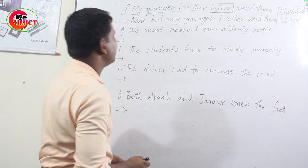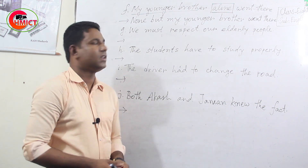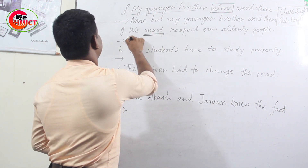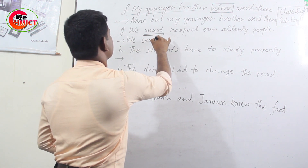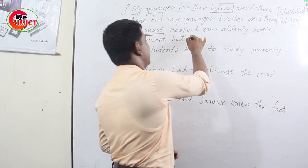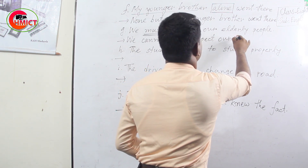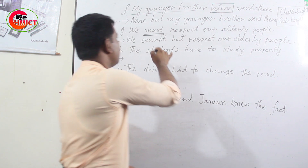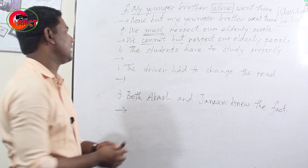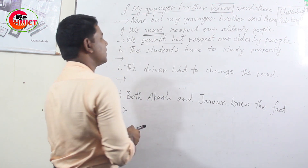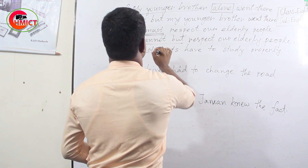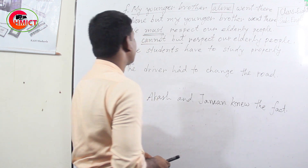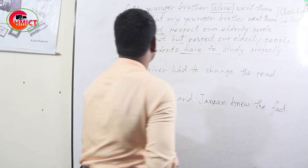Now sentence G: 'We must respect our elderly people.' You have to use 'cannot but' or 'could not but' instead of 'must'. So: 'We cannot but respect our elderly people.' There is also another way to change the sentence into negative — you can use 'cannot help', as you may have found in the grammar books.